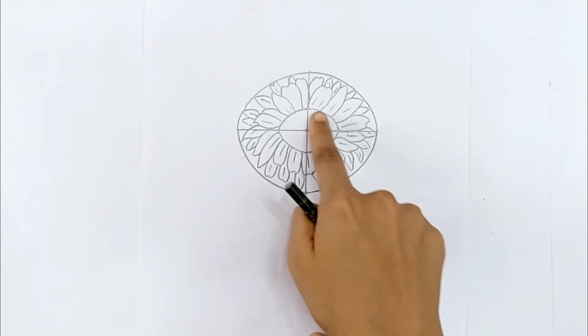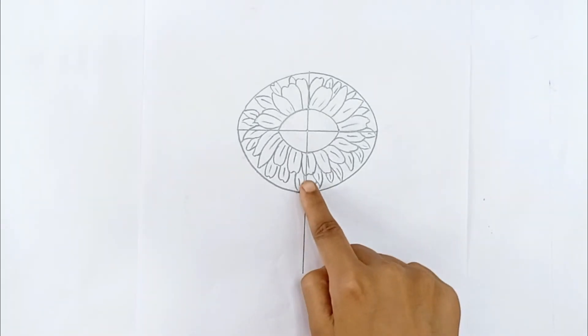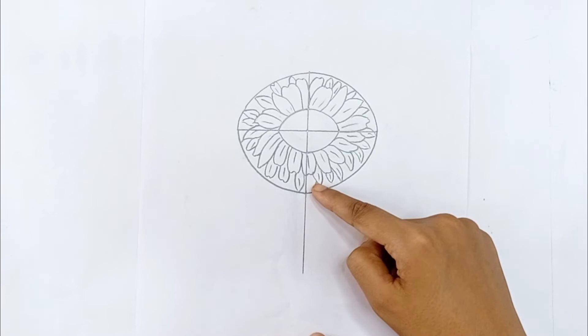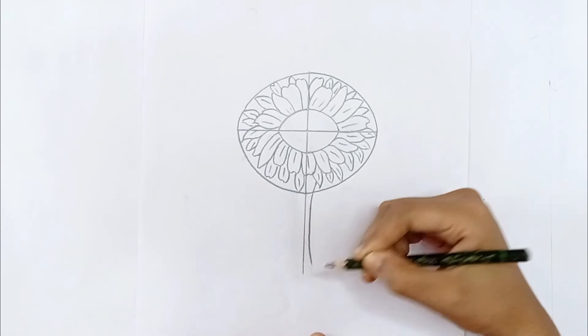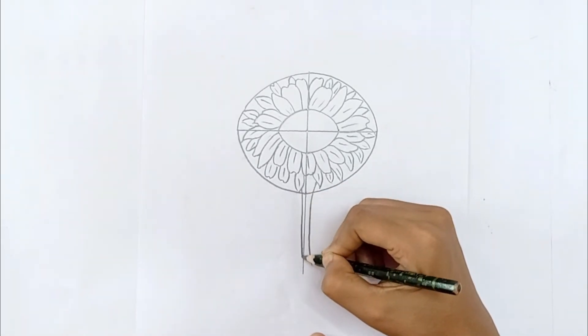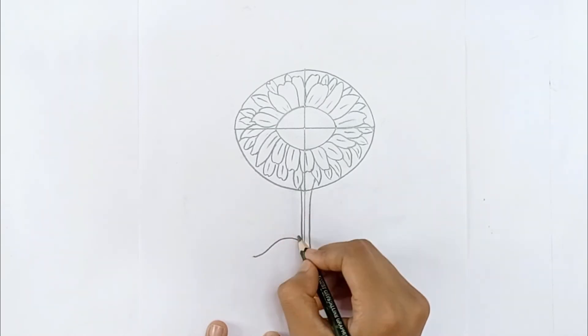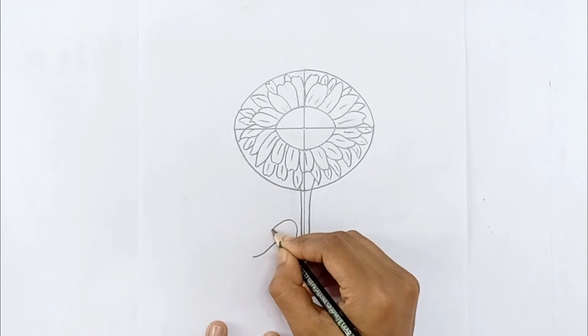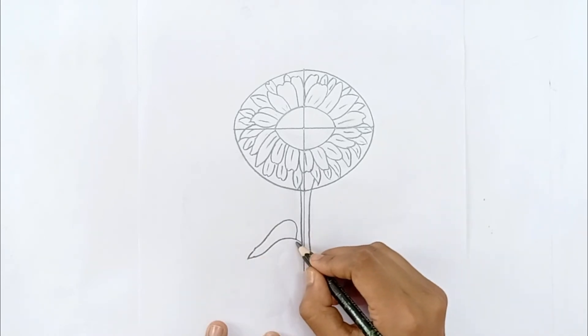Before drawing the inside of the sunflower we will draw the stick and the leaf. To make the stick we need to draw two curved lines. Now we will draw our leaves on the left. To draw the leaves I will first draw the line in the middle and then the lines on both sides.